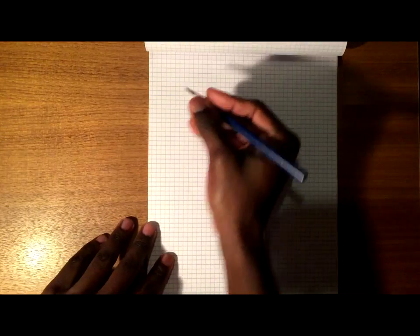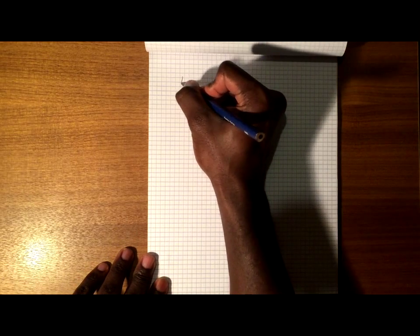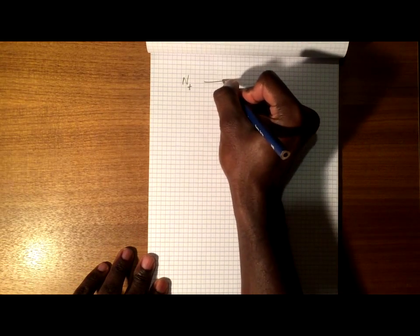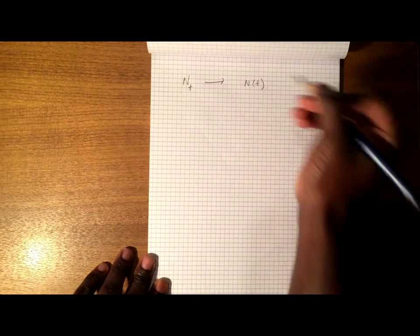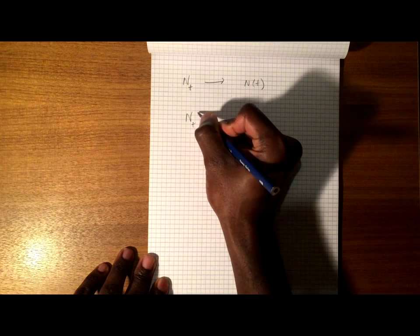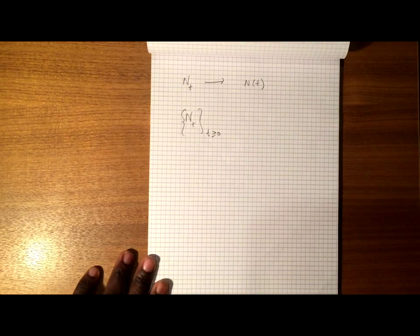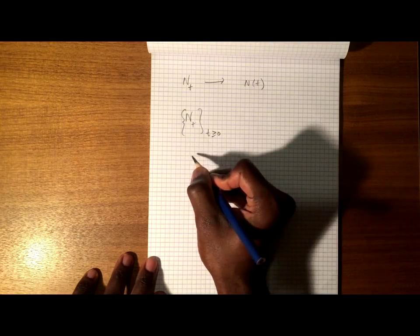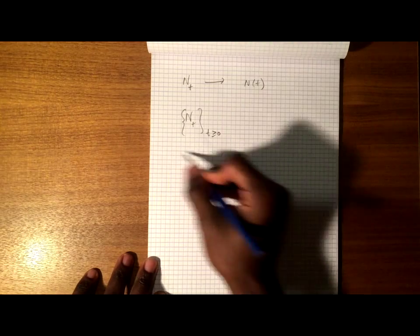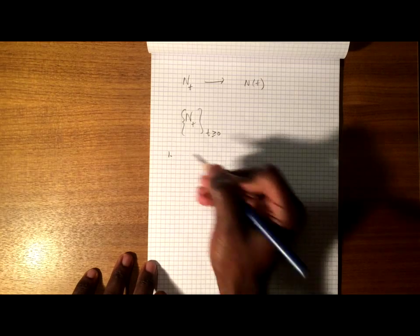So a Poisson process is an integer valued process which is normally denoted by nt or n of t, and we can also denote it as n of t for t greater than or equal to 0. But in order for this process to be a Poisson process, it must satisfy three conditions.